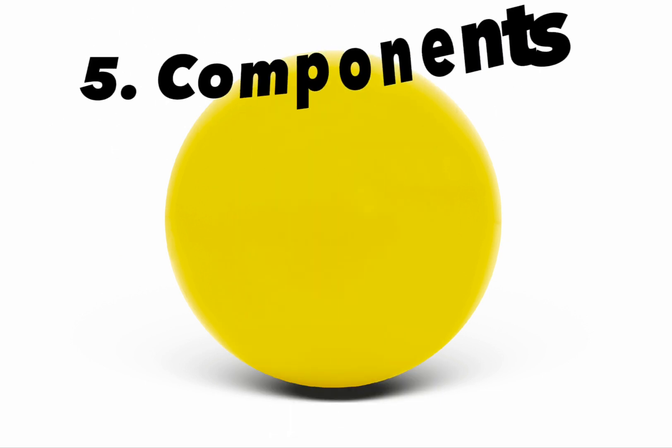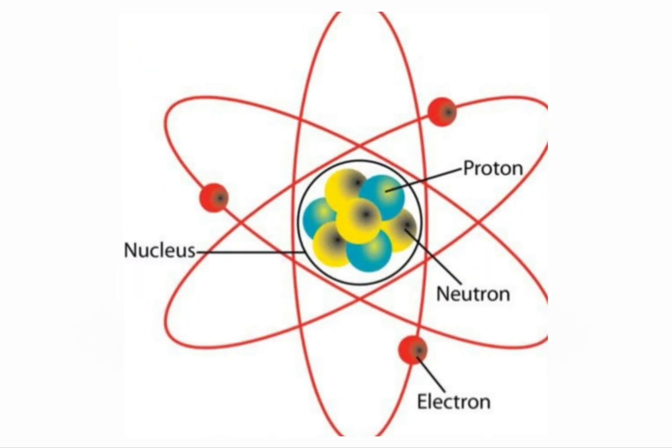5. Components. Neutrons, along with protons, are fundamental building blocks of atomic nuclei. They work alongside protons to determine an atom's identity, mass, and stability, thereby playing a critical role in the world of matter.